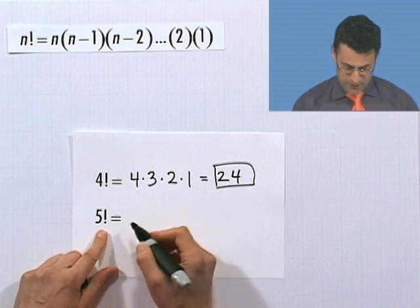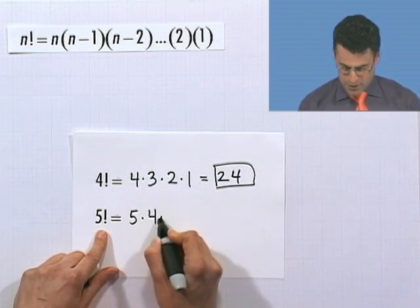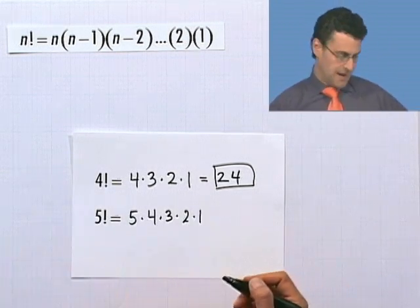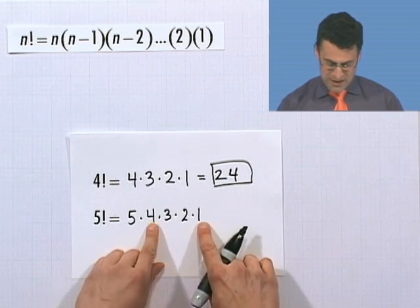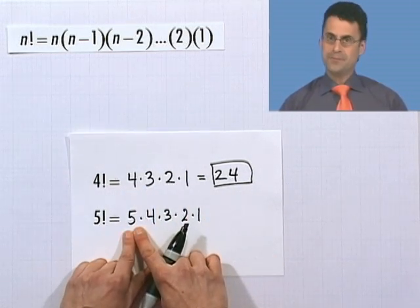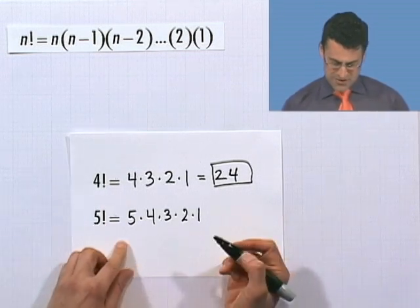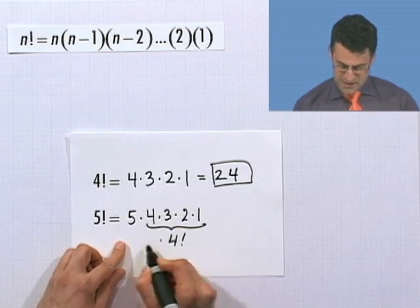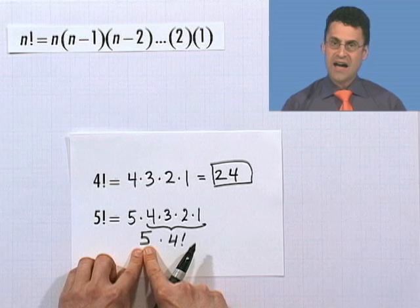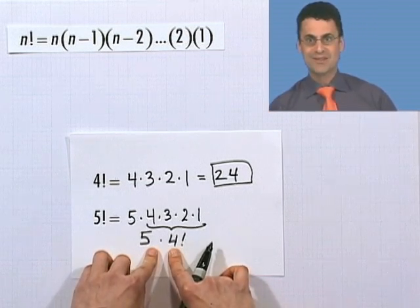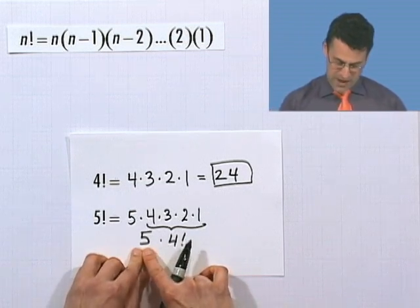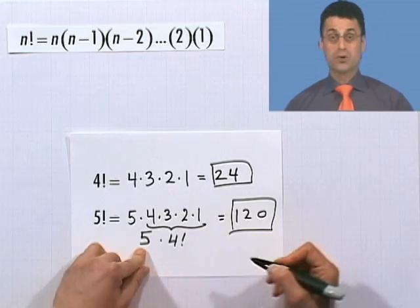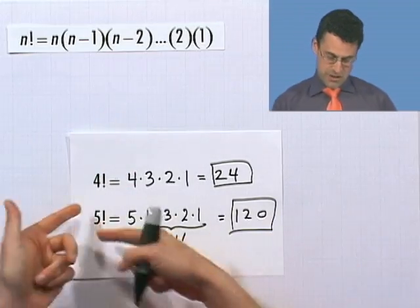What about 5 factorial? That's 5 times 4 times 3 times 2 times 1. Notice something interesting: it's actually 4 factorial times 5, because this part right here is just 4 factorial. So 5 factorial is nothing more than 5 times the previous factorial, 4 factorial. So 5 times 4 factorial is 5 times 24, which is 120. Sometimes you can use previous work to do the current work.